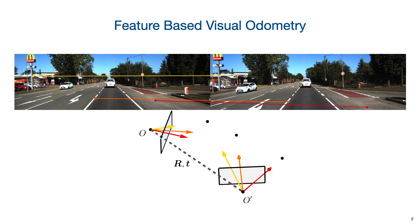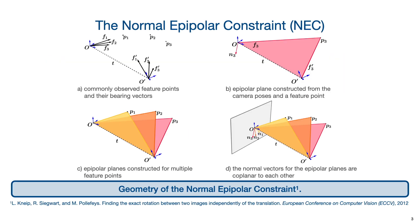A popular way to perform relative pose estimation is with the essential matrix, or the fundamental matrix for uncalibrated cameras. However, they often suffer from problems like solution multiplicity and planar degeneracy. To address this, Kneipp et al. introduced the normal epipolar constraint, which decouples rotation estimation from translation estimation by enforcing the coplanarity of the epipolar plane normal vectors. This leads to an elegant eigenvalue-based optimization for the relative pose.